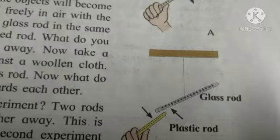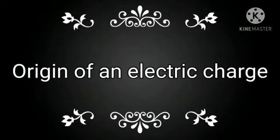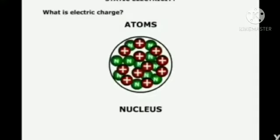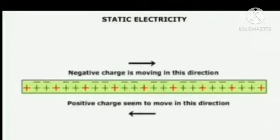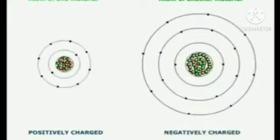Electric charges were named as positive charge and negative charge by Benjamin Franklin. Now let's see the origin of electric charge. All substances are made up of particles, and these particles are ultimately made up of very tiny atoms. Each atom has a stationary positive charge and negative charge. These two charges are perfectly balanced, therefore an atom is electrically neutral — it has equal amounts of positive and negative charge.